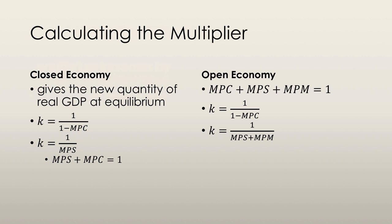When we calculate the multiplier, we're going to look at two separate cases: a closed economy and an open economy. A closed economy is one that does not engage in international trade. In this case, the multiplier gives the new quantity of real GDP at equilibrium. We give the multiplier the variable k, and it's equal to 1 over 1 minus the marginal propensity to consume.